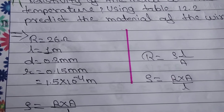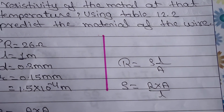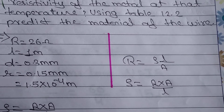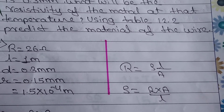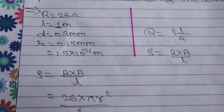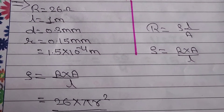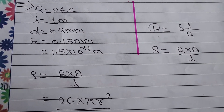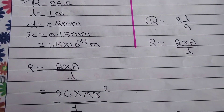Now we solve the question. Resistivity depends on the length of the wire and the cross-section area. The formula is R equals rho L upon A, which gives resistivity rho equals R into A upon L. The wire has a round cross-section, so the area is pi R squared, where R here is the radius.